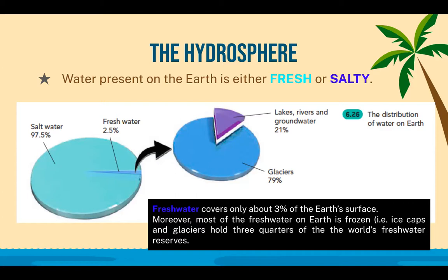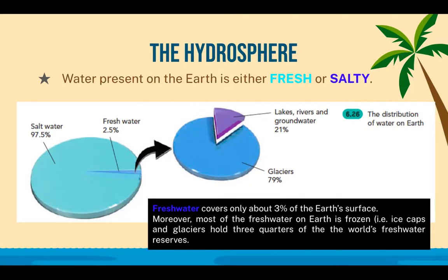When these rocks undergo erosion, weathering, and deposition and find themselves settled in water, some of their salt is broken down into the water, making it salty. Fresh water covers only about 3% of the Earth's surface. Moreover, most of the water on Earth is frozen — ice caps and glaciers hold three-quarters of the world's fresh water reserves. So 97.5% of all water is salt water, and only 2.5% is fresh water.